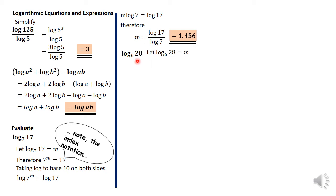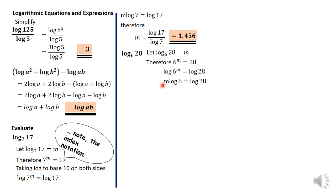Log base 6 of 28 is approached the same way. We let the expression be equal to m, put it in index notation: 6 to the power m is equal to 28. Take logarithm to base 10 of both sides, and move the m from being a power to m log 6 is equal to log 28. Divide both sides by log 6, and the answer is 1.86.